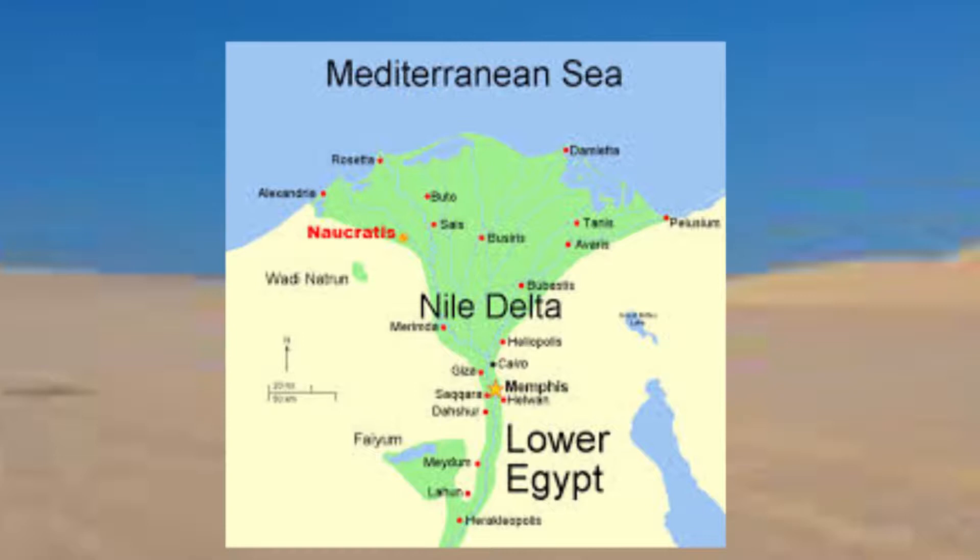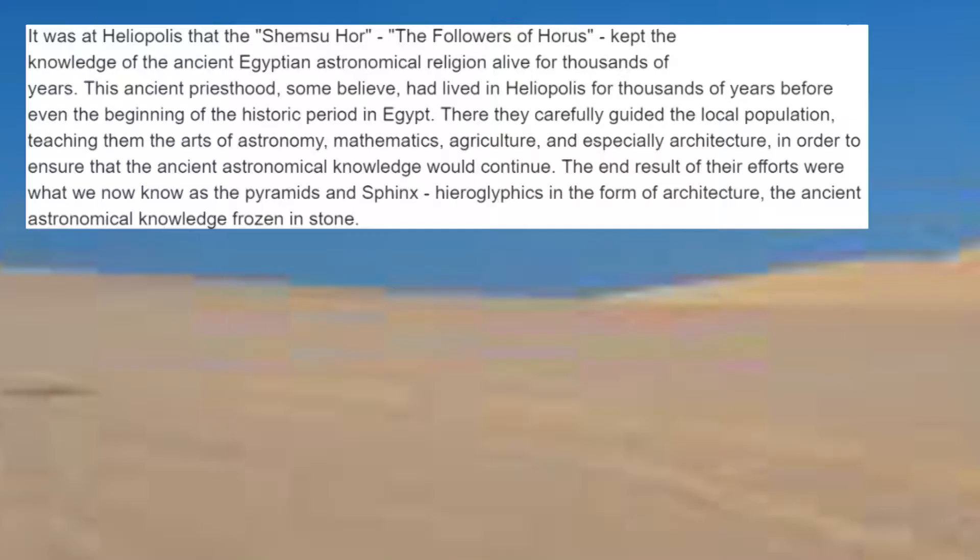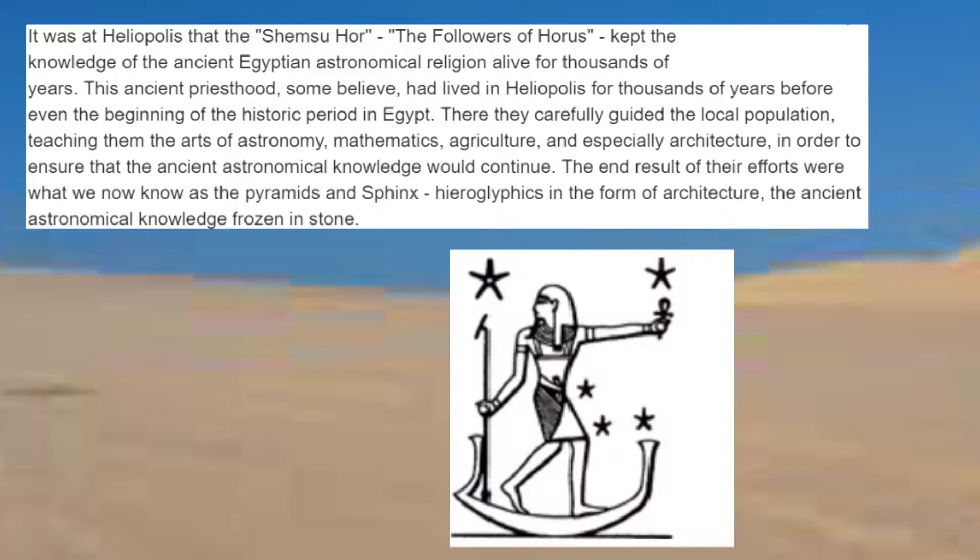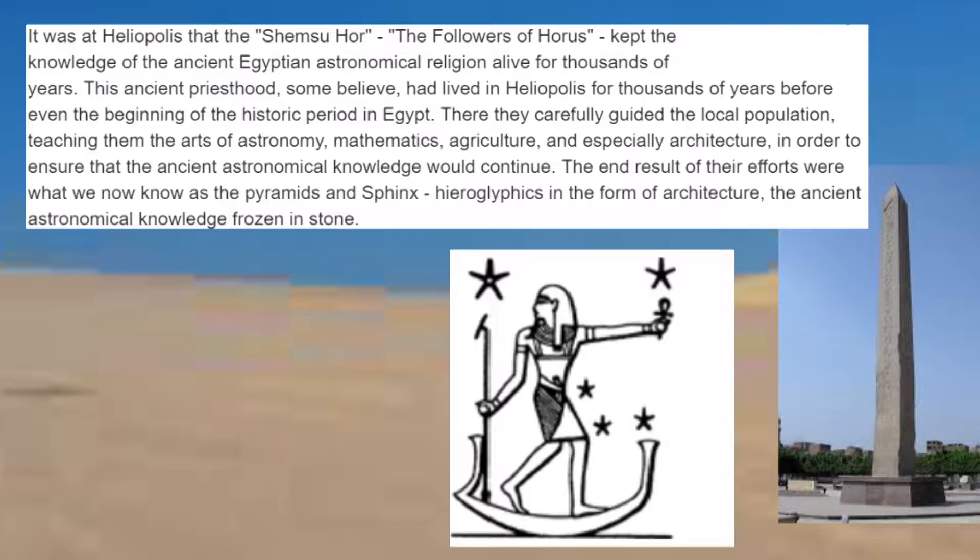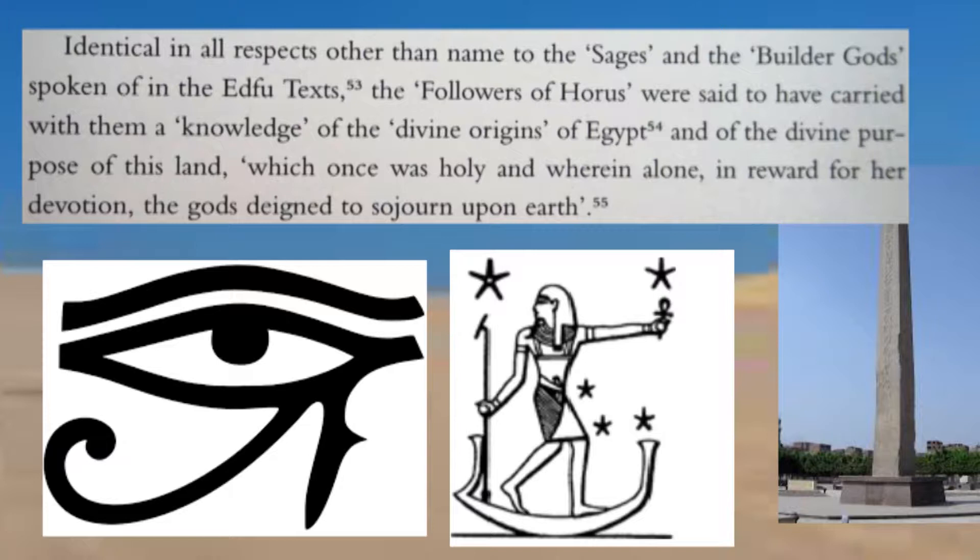The pyramids are next to Heliopolis, one of the largest religious and scientific centers of ancient Egypt, and this is where the ruling sages followed the astronomical road of Horus. At Heliopolis, the followers of Horus kept the knowledge of the ancient Egyptian astronomical religion alive for thousands of years. Heliopolis was headed by a high priest who was known as chief of the observers. His main responsibility was to observe the night sky and the motion of the stars.